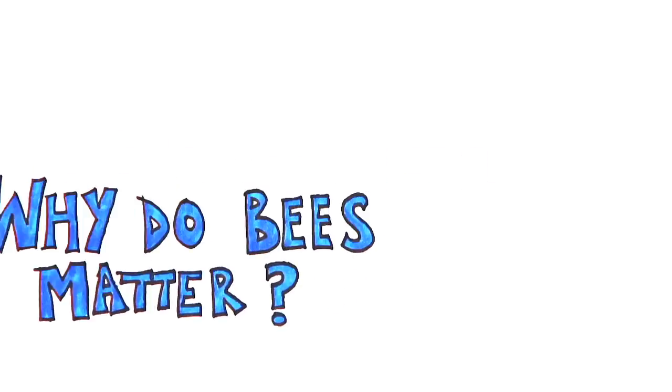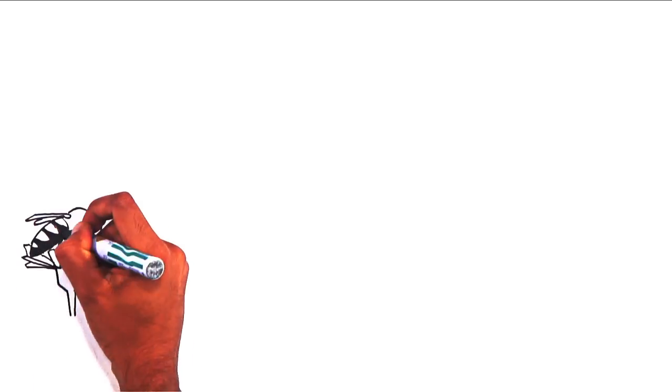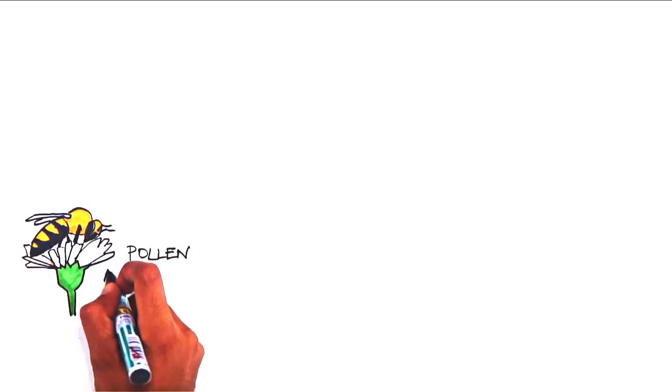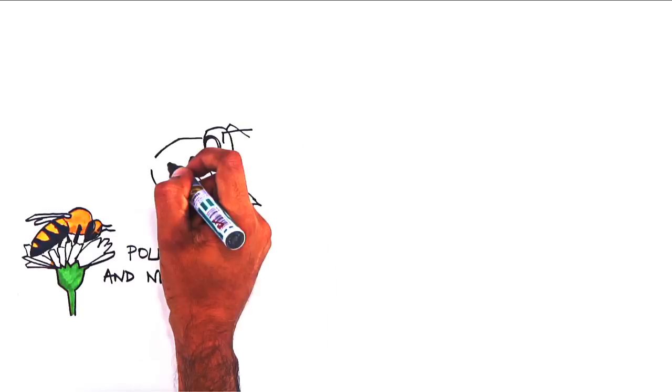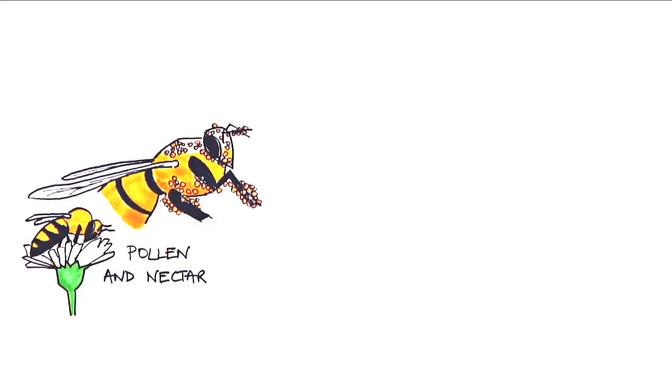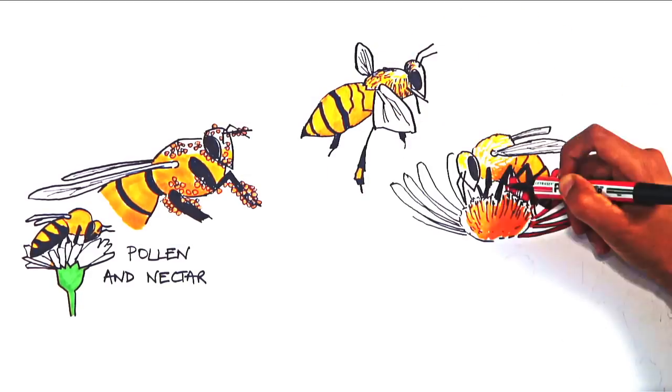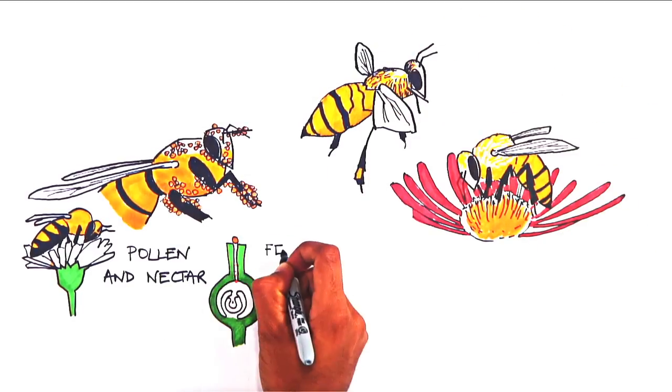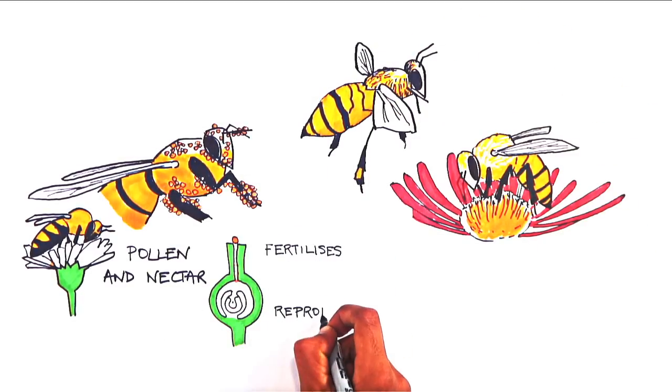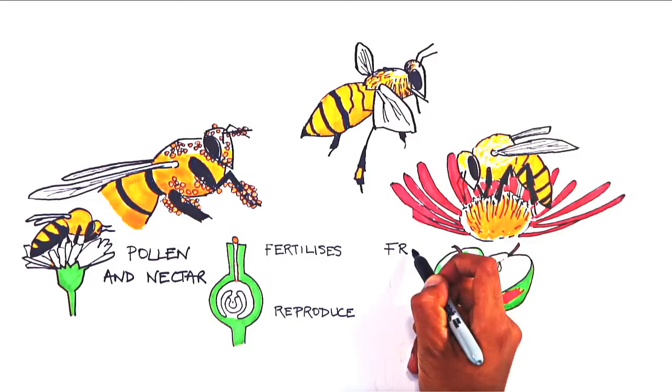Why do bees matter? Most bees are pollinators. They eat pollen and nectar from flowers. When the pollen sticks to their bodies, it gets transferred between the flowers they visit. This fertilizes the plants in the process, allowing them to reproduce and grow fruits and seeds.